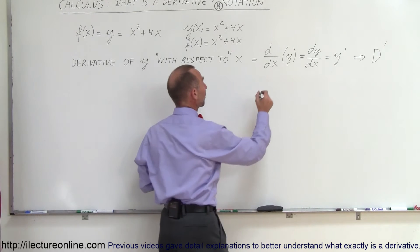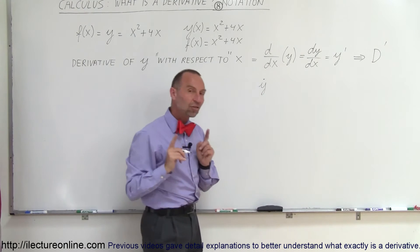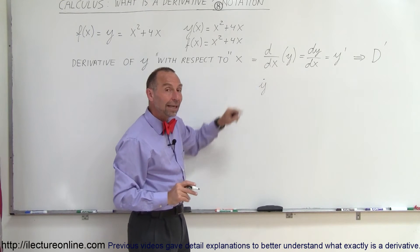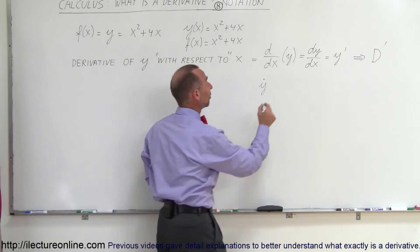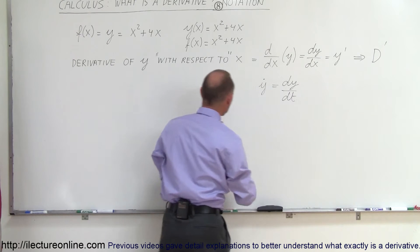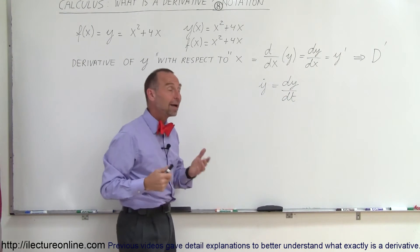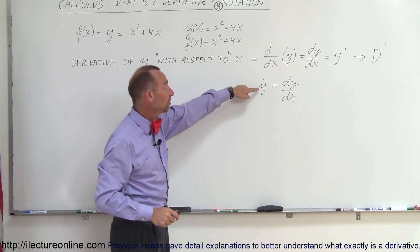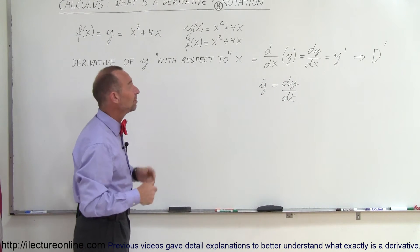Sometimes you write y with a dot over it. That also means a derivative of y, but when you write it with a dot it usually means with respect to t, where t stands for time — so this really means dy/dt. The function y should be a function of time t before you write it like that. When you see y with a dot, it simply means the derivative of y with respect to t.